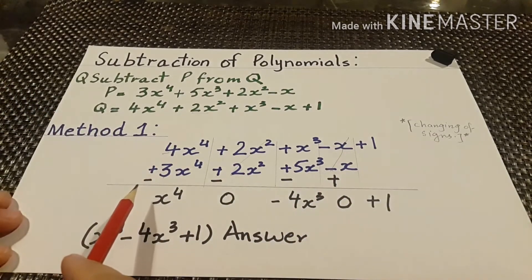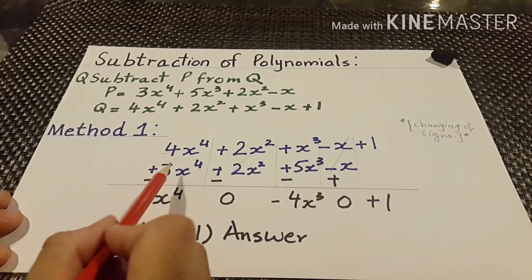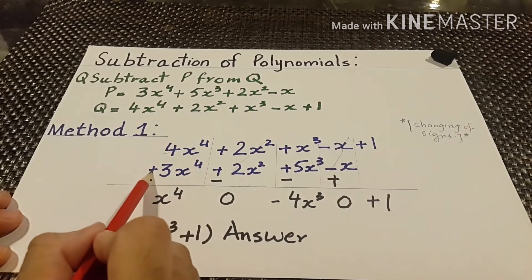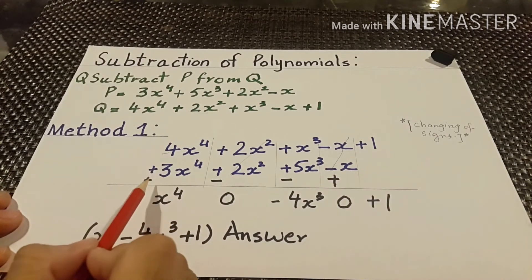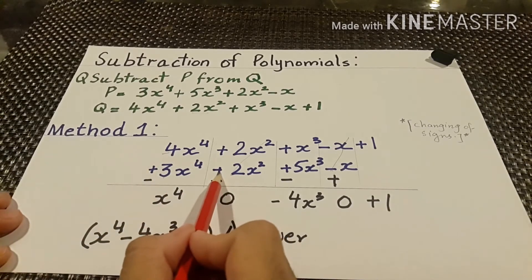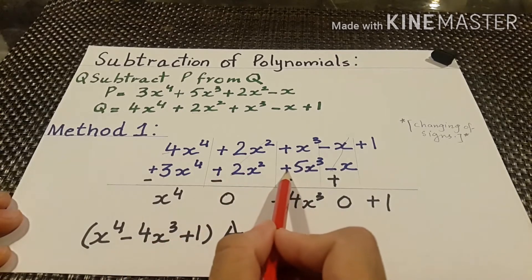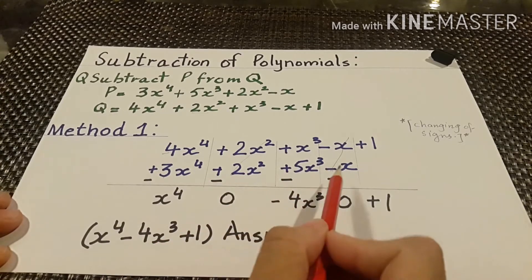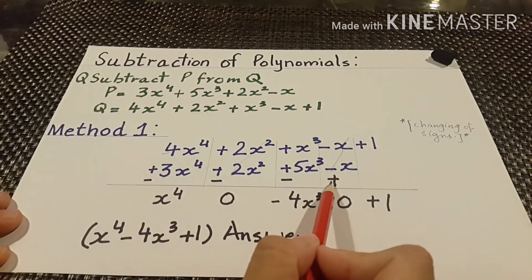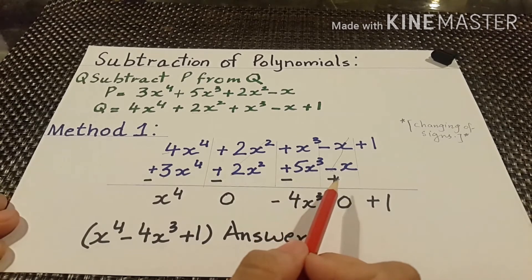For subtraction, we will change the signs. Here the sign is plus, we change it to minus. Here the sign is plus, we change it to minus. Here plus becomes minus. Here minus is changed into plus. This is the key point to keep in mind when subtracting a polynomial using this method.